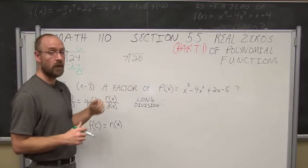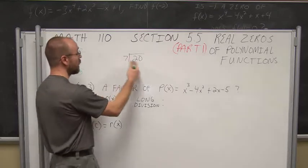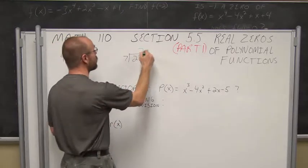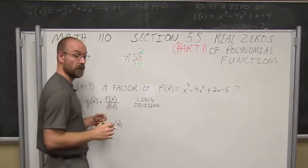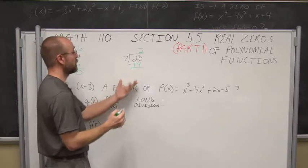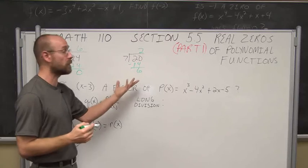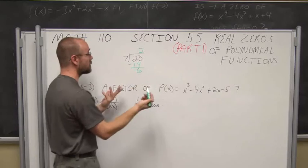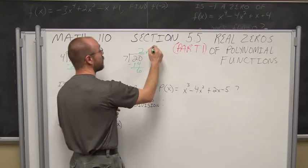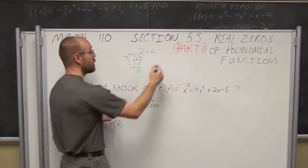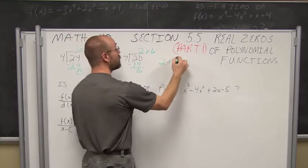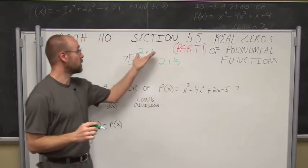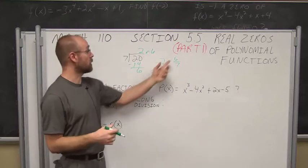What if I want to divide 20 by 7? The closest I can get to 20 without going over — kind of like the price is right, the highest bid without going over — would be 2 times 7, which is 14. If I find their difference, I see I get 6. 6 is my remainder. When you did division way back in grade school, you didn't carry it out into decimals. You wrote it as a remainder — r of 6. That means 2 plus a remainder of 6 sevenths. 6 remains to be divided by 7, which is why we call it a remainder — it remains to be divided.